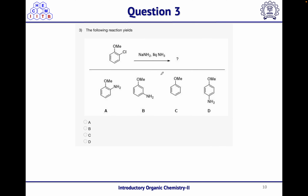Going back to the options, option B is the right answer. The two possibilities were options A and B. Due to steric factors and stabilization of the anion, option B will be the major product. All other options can be ruled out. This reaction proceeds via a benzyne intermediate.